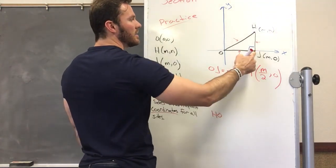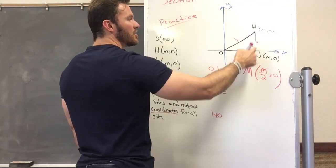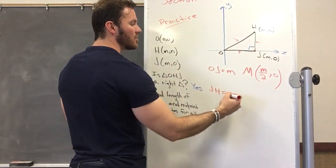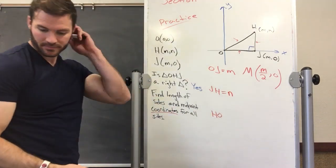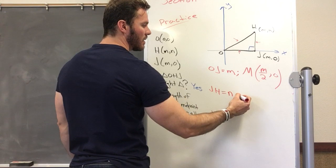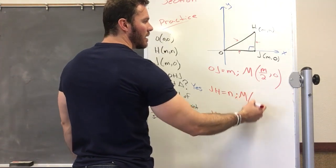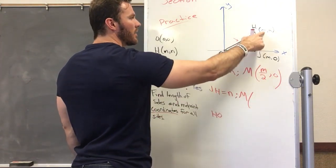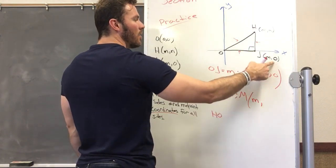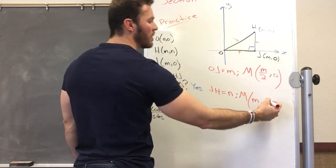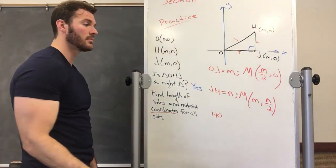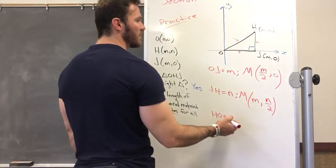JH—it went just straight up, from zero to N, so its length is N. The midpoint: it didn't move anywhere on the X-axis, so it stays at M. But it did go up to N, so let's go halfway. The midpoint is (M, N/2).